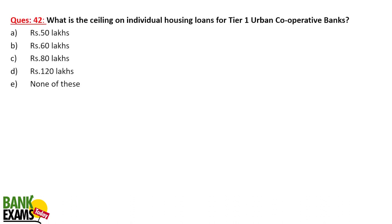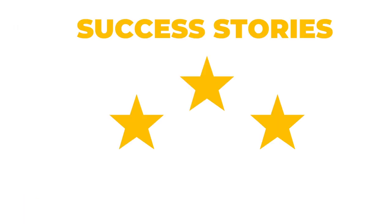What is the ceiling on individual housing loans for Tier 1 Urban Cooperative Banks? Tier 1 UCBs can give a maximum of 60 lakh as an individual housing loan.